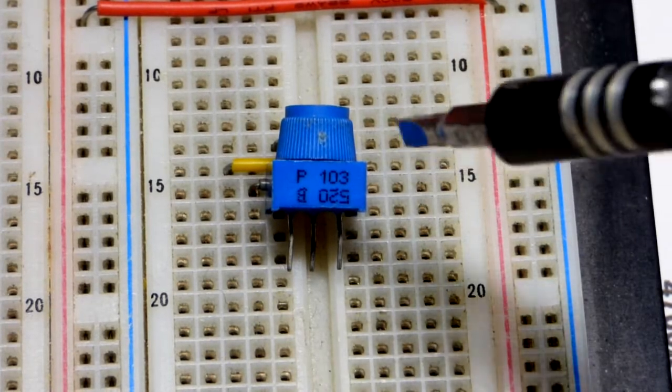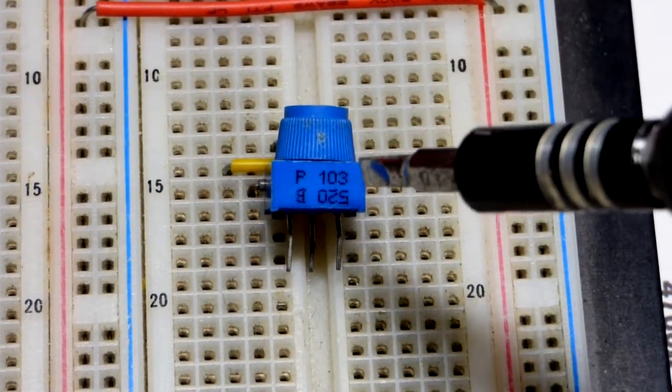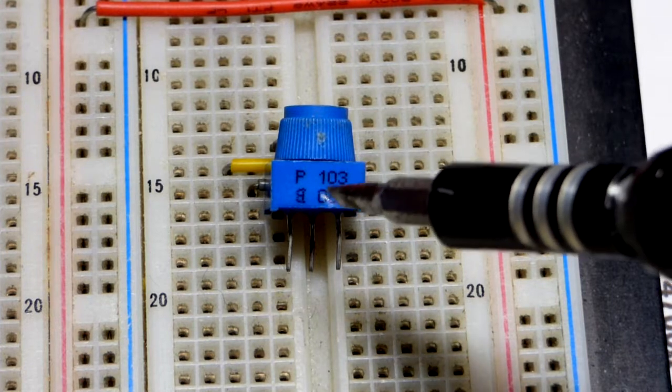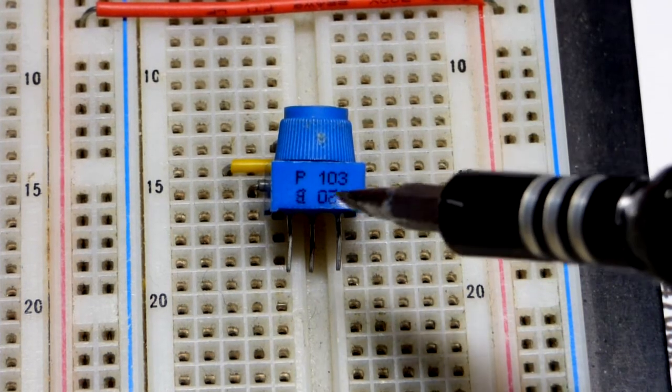Today we're going to take a quick look at the trimmer potentiometer, trim pot for short. This is a 10,000 ohm trim pot right there.